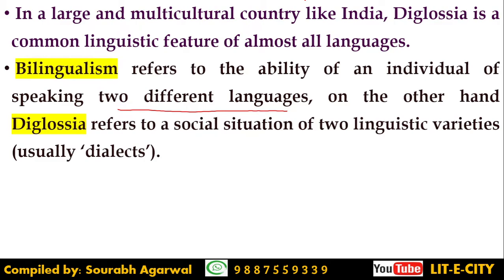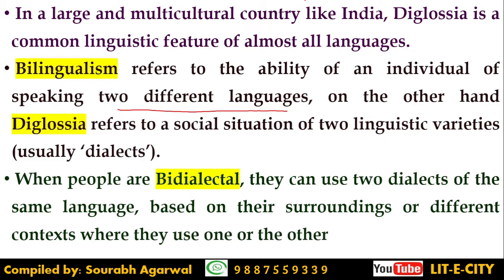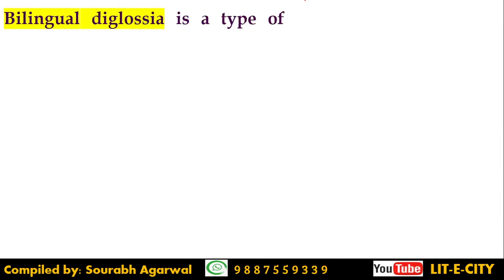Diglossia, by contrast, refers to a social situation where two language varieties or dialects are used based on context. A related term is bidialectalism — when people use two dialects of the same language based on their surroundings or different contexts. It is similar to diglossia, but bidialectalism is about two dialects rather than two languages. For example, Hindi has so many dialects that people moving from place to place may use two different dialects.